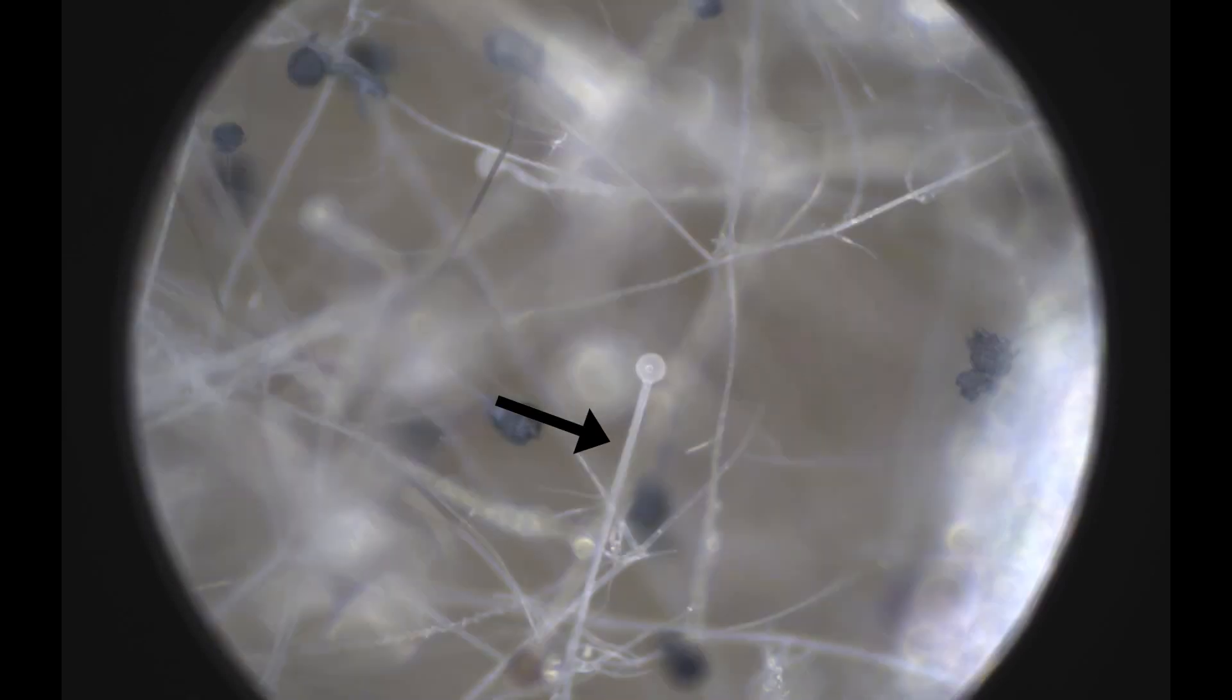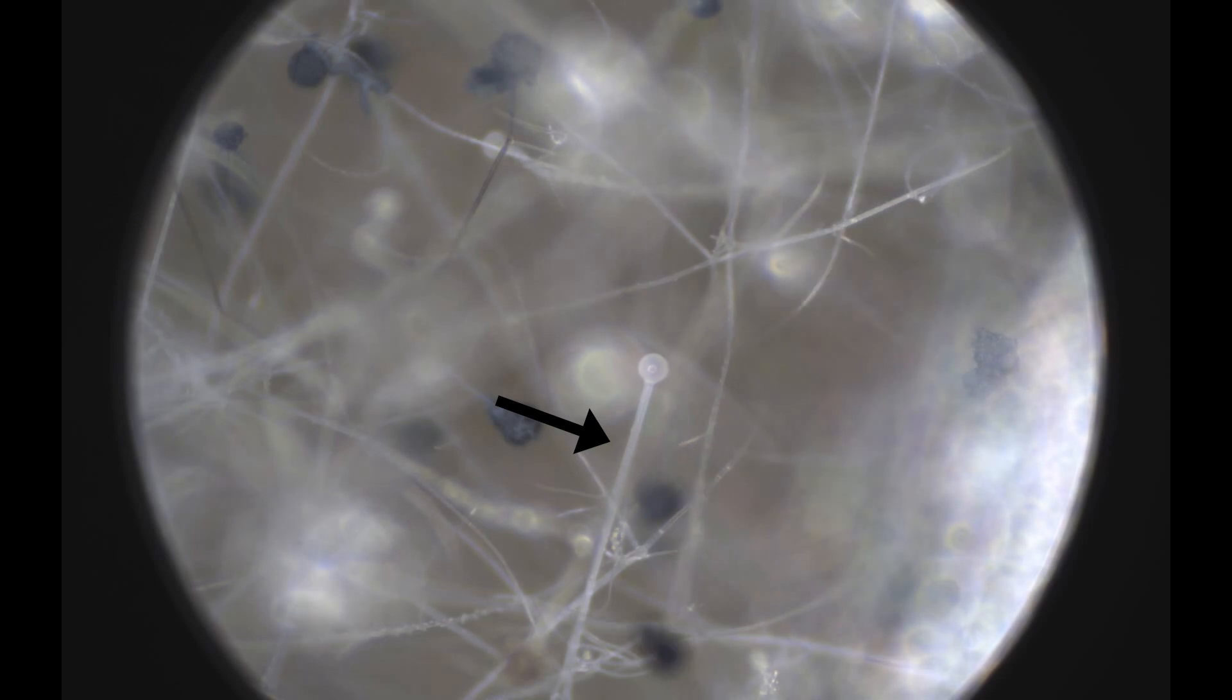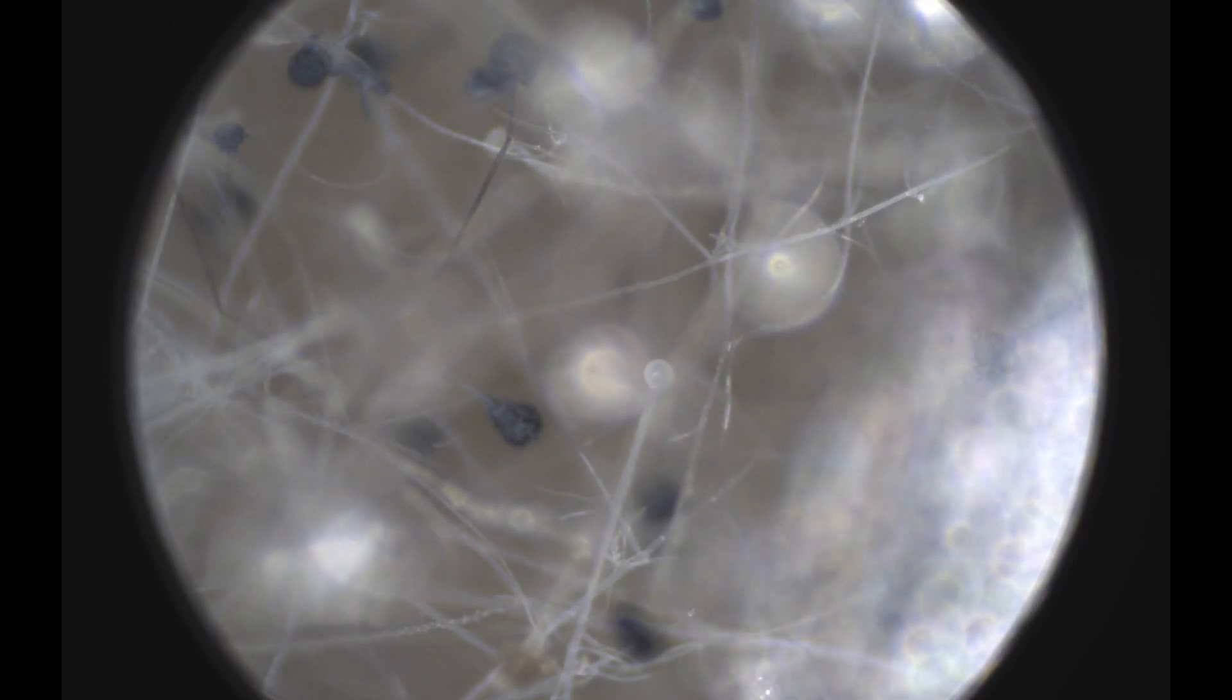Third, these long stalk-like structures are called the sporangiophores, but they are more commonly referred to as stipes. They hold up the sporangia to help disperse the spores more effectively.